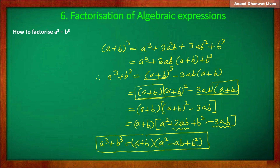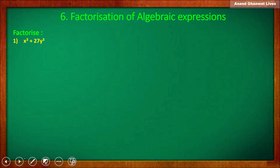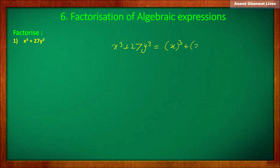We have to remember these factors. Now let us solve some examples based on the factors of a cube plus b cube. In the first example, x cube is the cube of x and 27y cube is the cube of 3y.